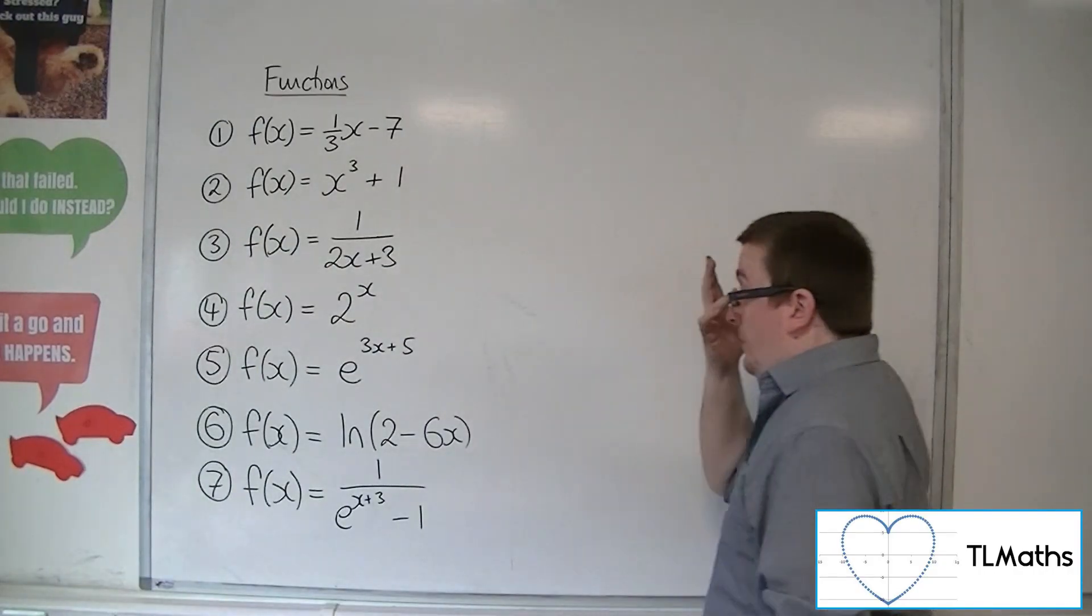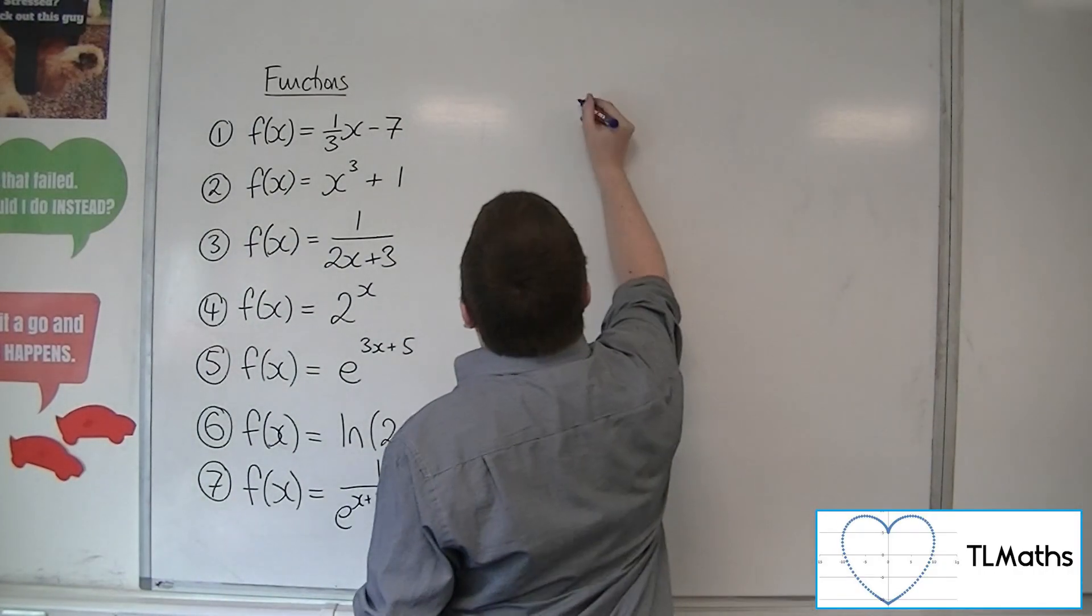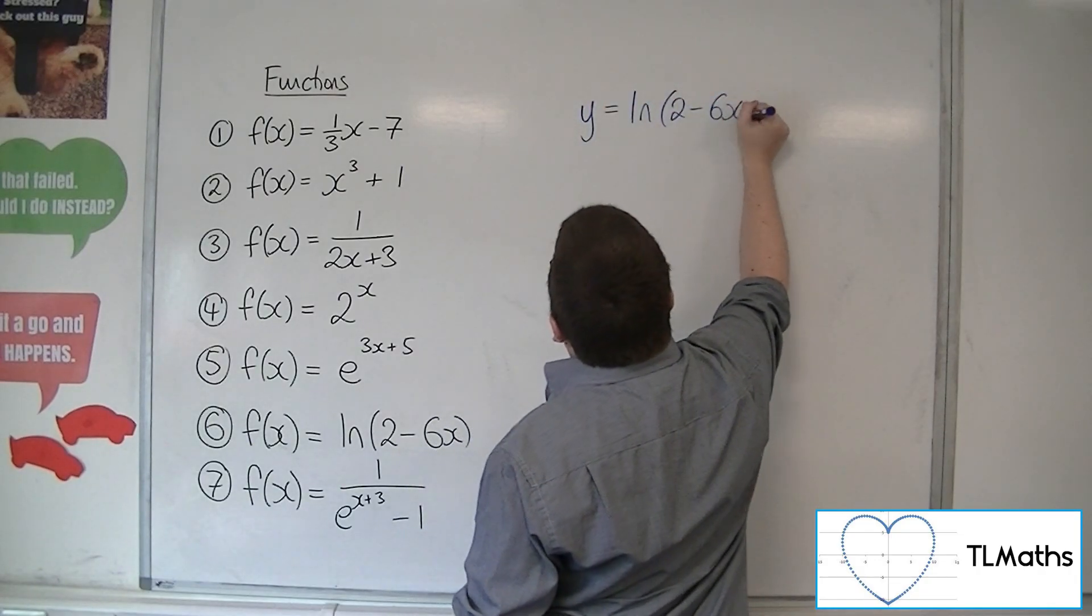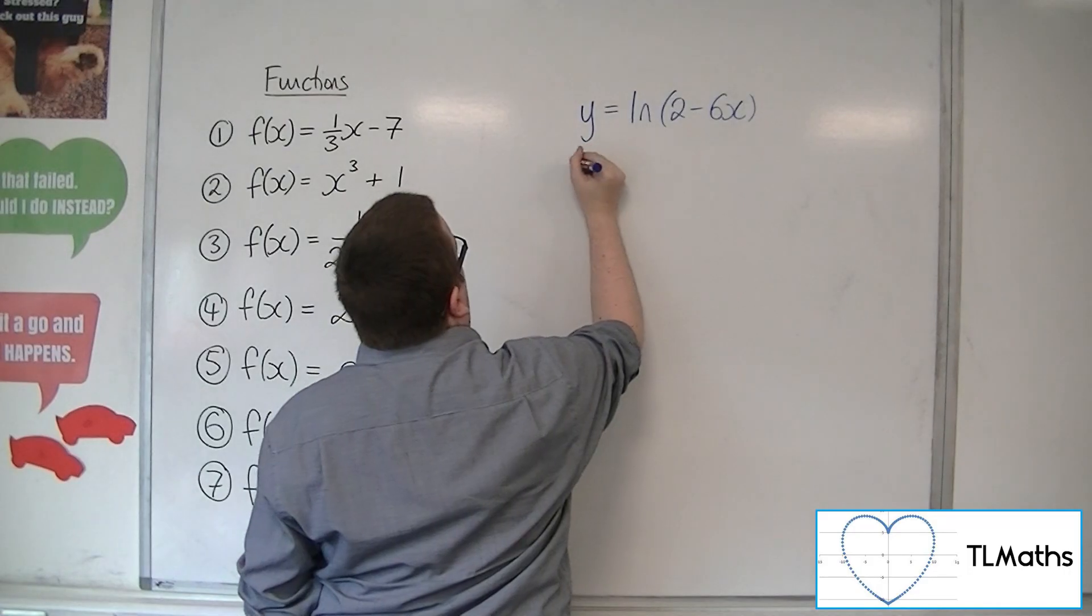So number 6, we've got ln(2 - 6x). So y = ln(2 - 6x). First of all, swap the x's and y's.